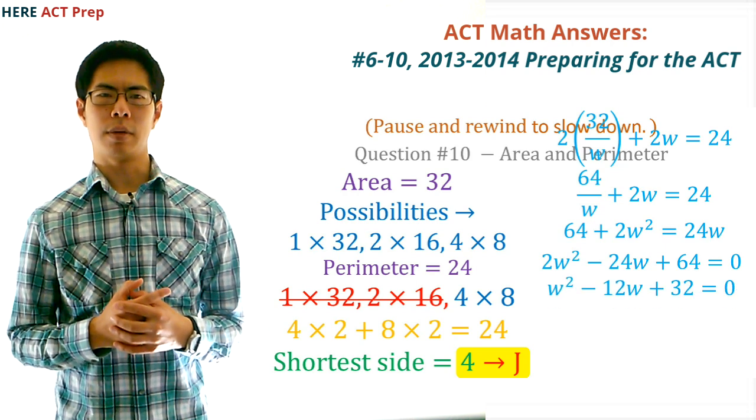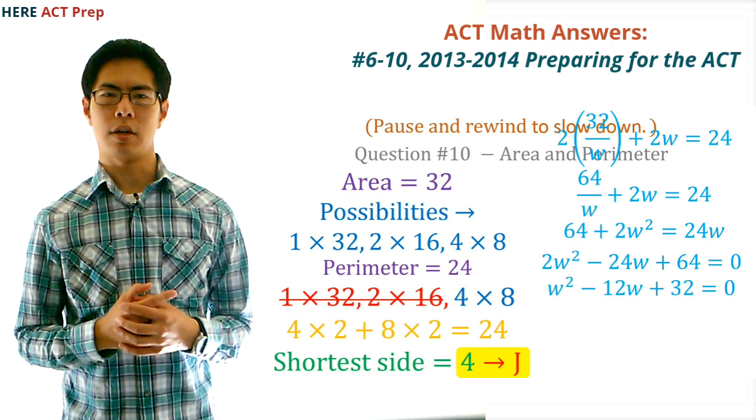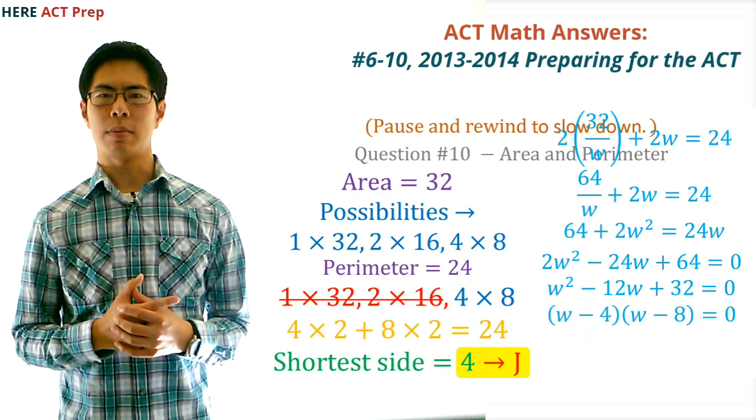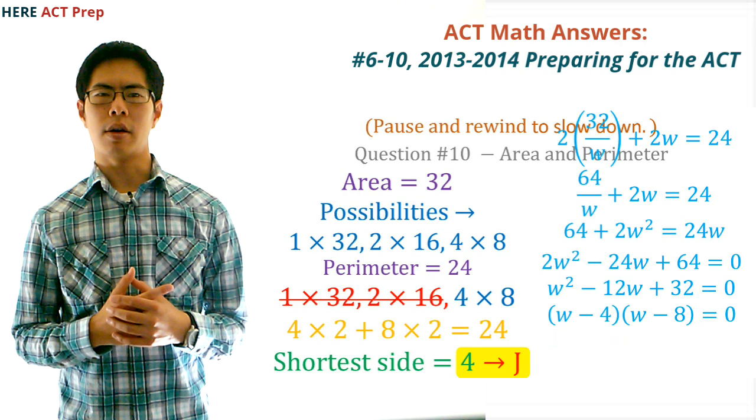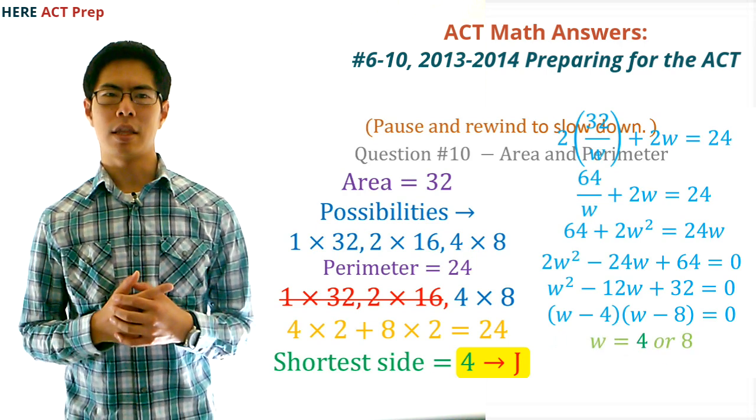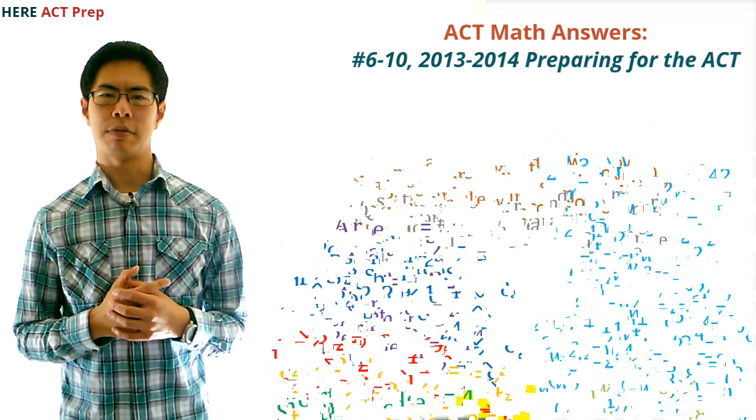Next, we divide everything by 2 to get w squared minus 12w plus 32 equals zero. Next, we factor this polynomial, and we get w minus 8 times w minus 4. So, our two solutions are 8 and 4, which are the two lengths of the sides. And as you can see, this method took forever and was a lot harder. For this question, it really helps to find the shortcut.